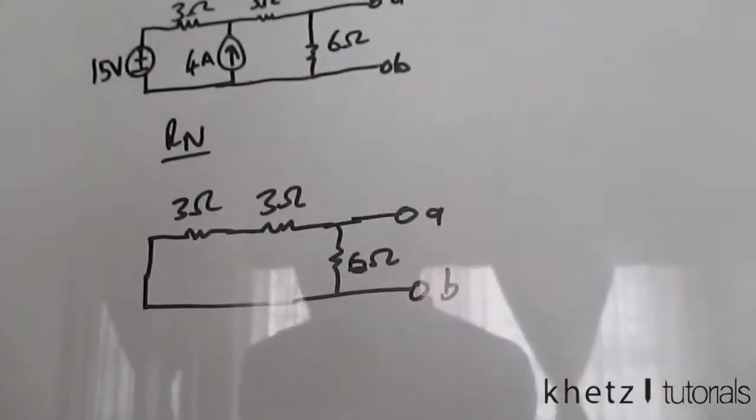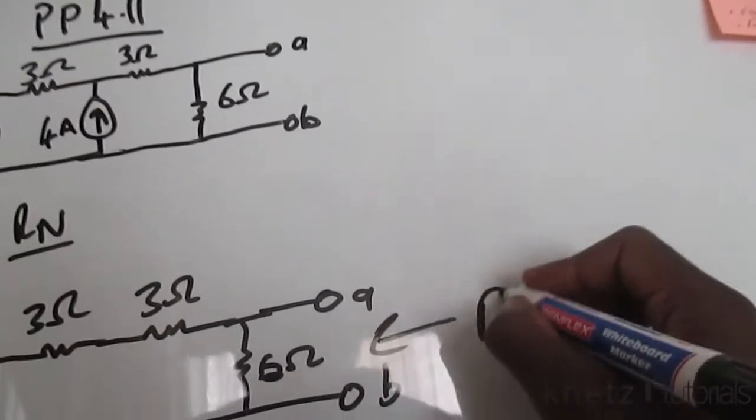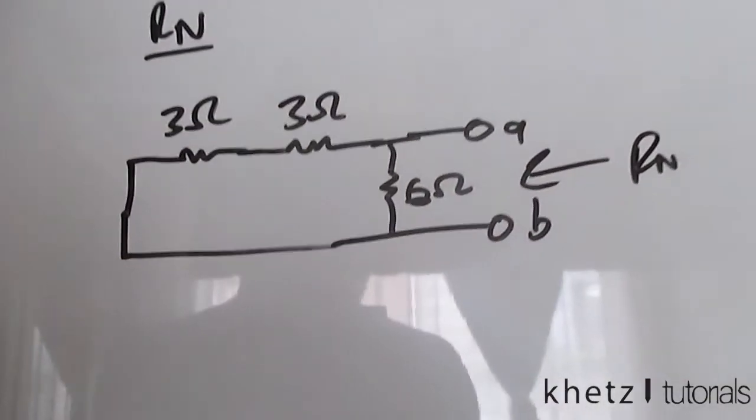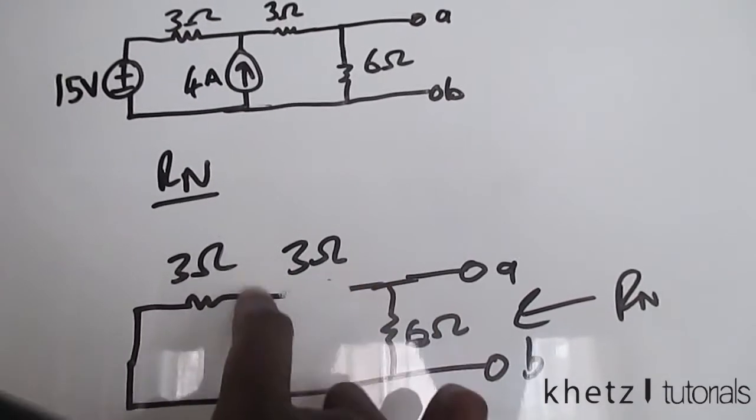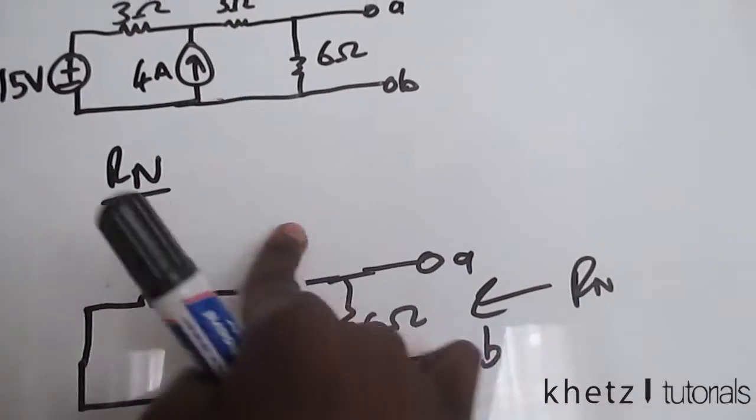Now all we have to do is to find the equivalent of this. So we see that these two are in series, so you can add them up. 3 plus 3 is actually 6.